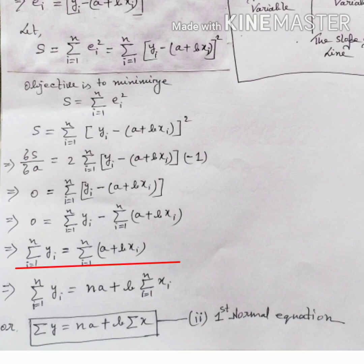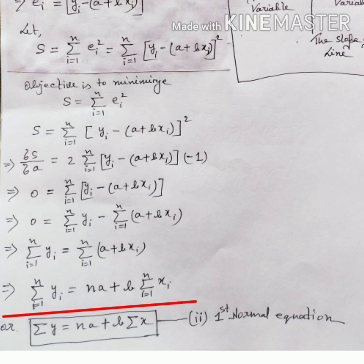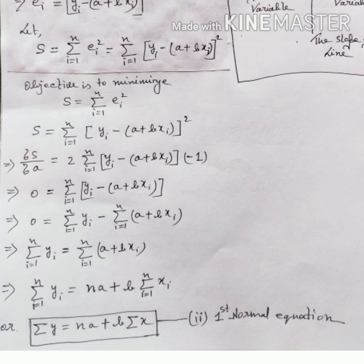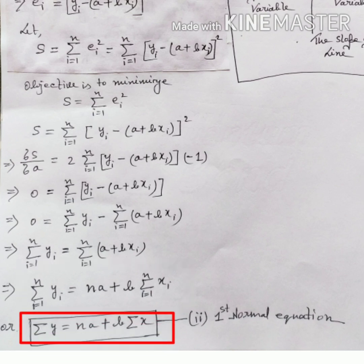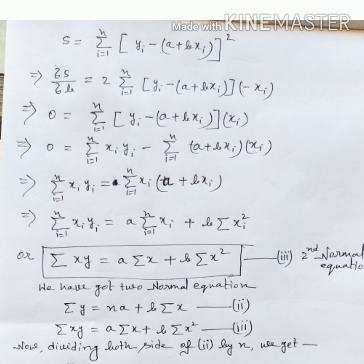Expanding the right-hand side: Σy_i = na + b·Σx_i, since a is a constant summed n times and b is a constant taken outside the summation. This is the first normal equation, written in general form as: Σy = na + b·Σx.